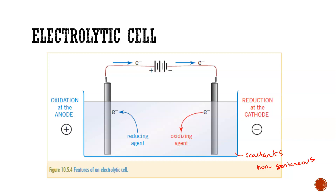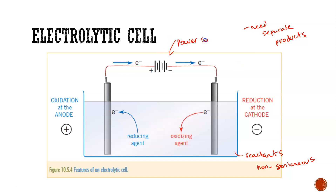When we look at the setup of an electrolytic cell there are a couple of features that are different. We generally don't need to separate the reactants because the reaction is non-spontaneous. We do need to separate the products of the electrolytic process, and we will have a power source connected to our external circuit.